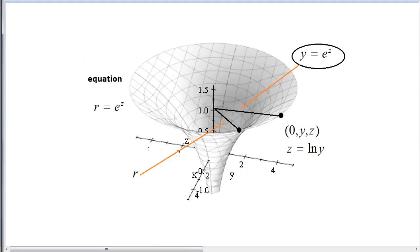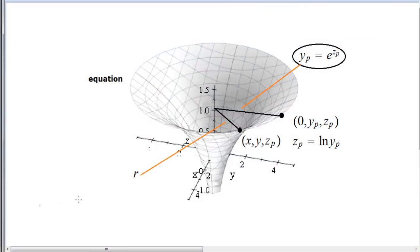So if we continue to look at that, let's take a typical point. And one more thing, the equation of this circle will be what? r equals e to the z, because e to the z is the radius.